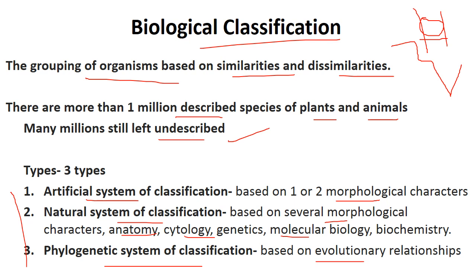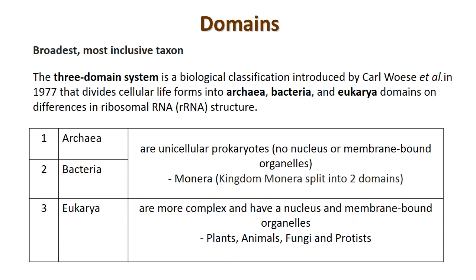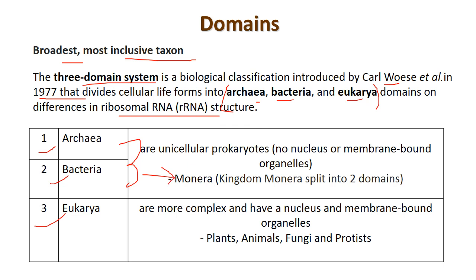In the taxonomical hierarchy, the domain is the broadest term. The three-domain system was first described by Carl Woese in 1977. He described three domains — Archaea, Bacteria, and Eukarya — based on the structure of ribosomal RNA. Archaea and Bacteria belong to the kingdom Monera; they are unicellular prokaryotes with no nucleus. Eukarya are more complex, with a nucleus and membrane-bound organelles, and include the kingdoms Plantae, Animalia, Fungi, and Protista.